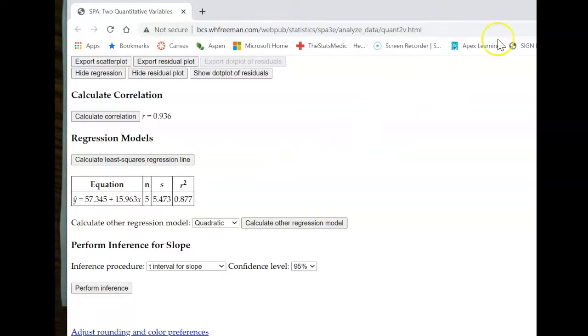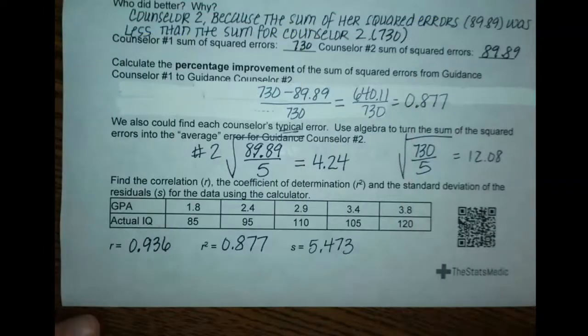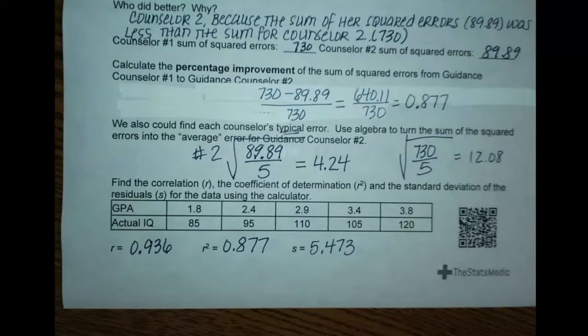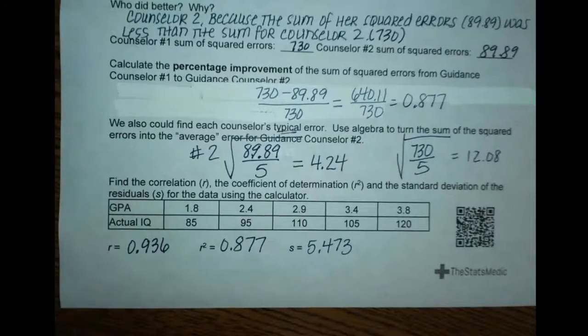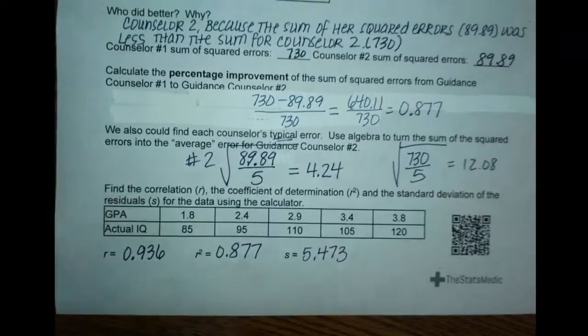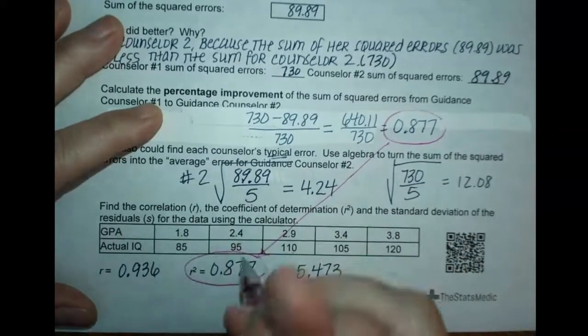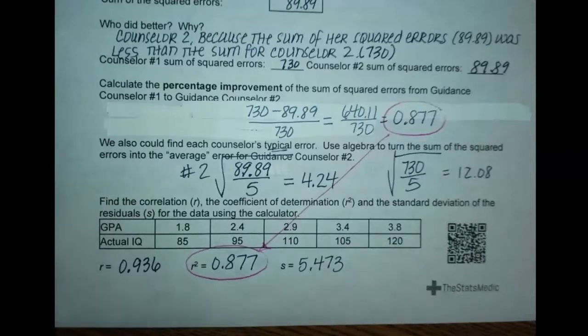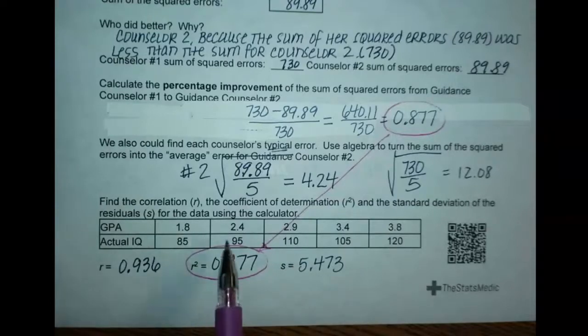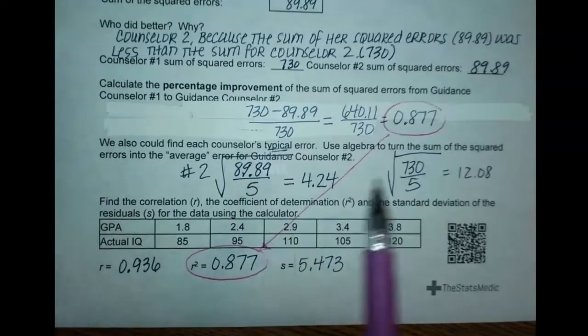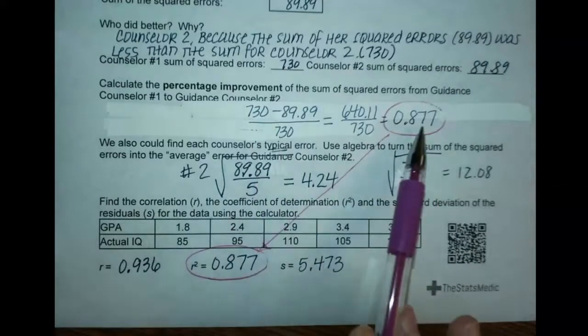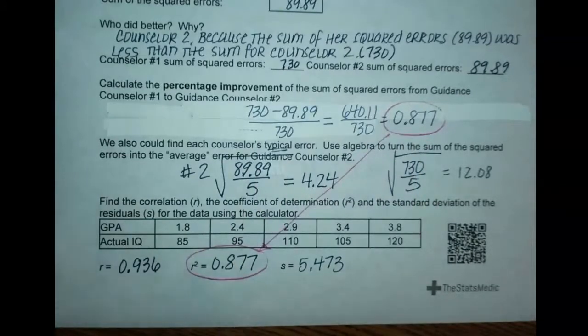We've got the correlation coefficient and this number for r squared. R squared is really telling you how good a job your line will do at predicting a score. Counselor number two will have a much better time having her line predict a score than counselor number one. It's very similar to this idea, but you won't ever have to calculate it out. You can get it through doing the r squared where you do stat calc eight for your linear regression and pull it out of there.